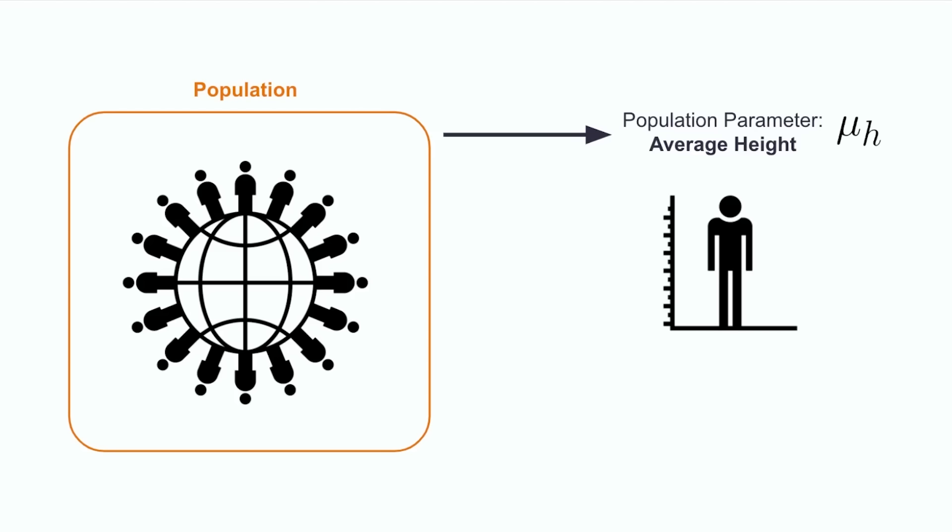First of all, that person probably can't go around and measure the height of every other person. Second, by the time they get to the last person, the population would have changed. People would have gotten taller, babies would be born, and there are any other number of complications. Pause the video here for a moment to think about how statisticians get around a problem like this, and still manage to come to conclusions about entire populations.